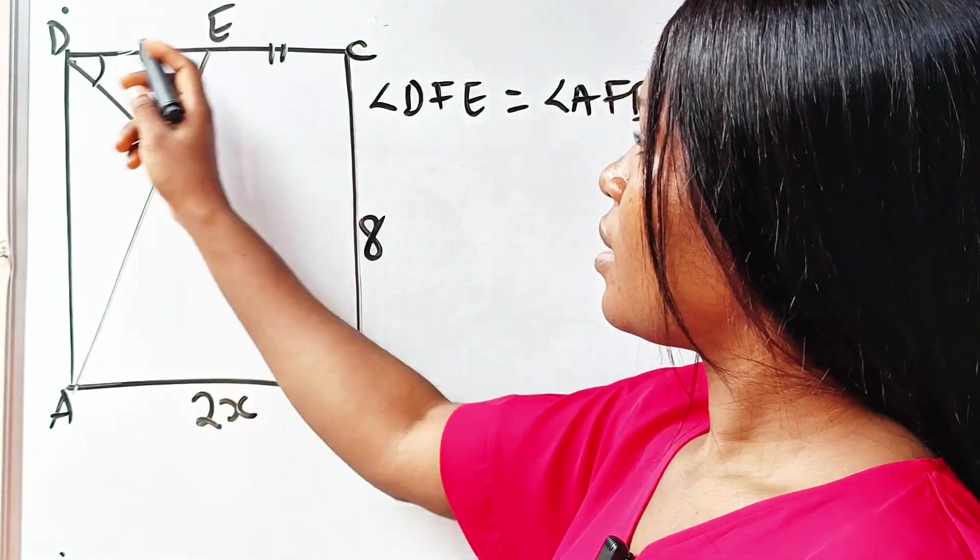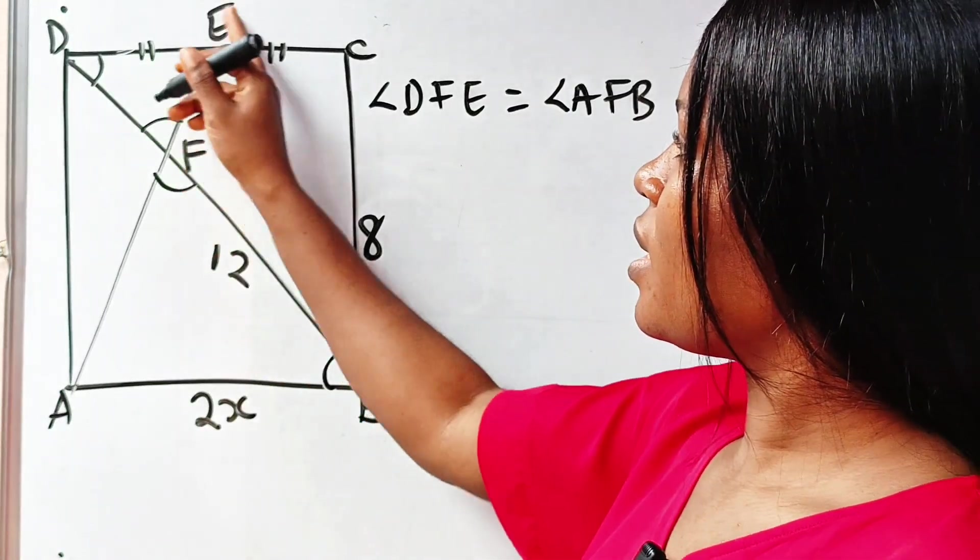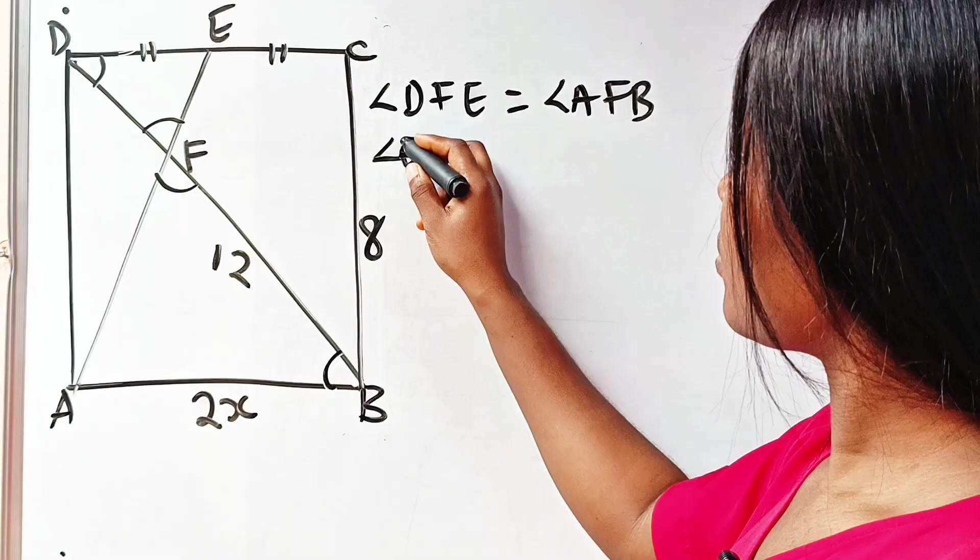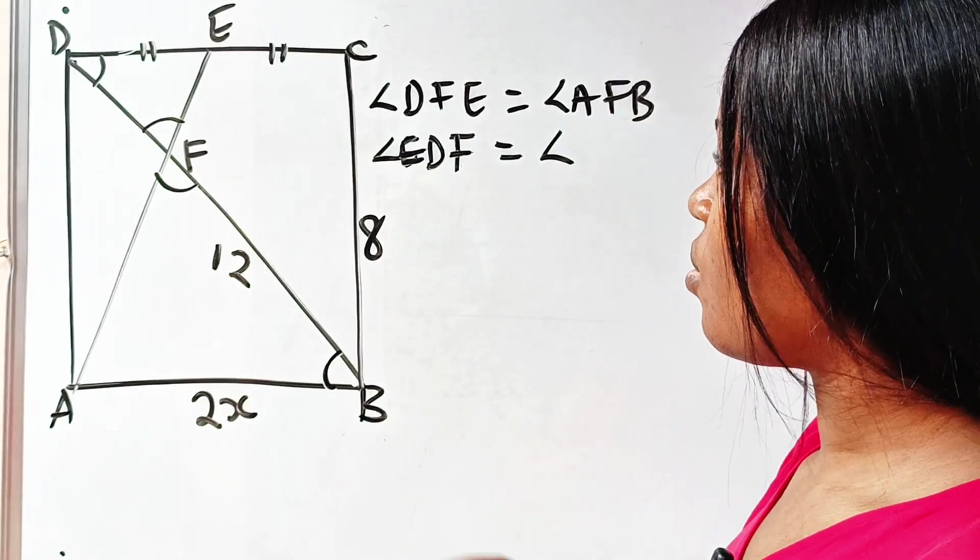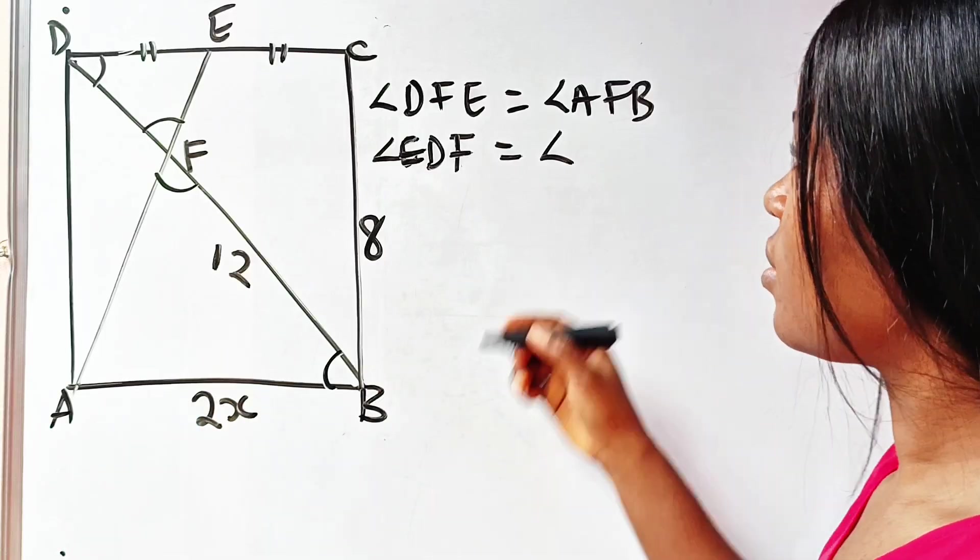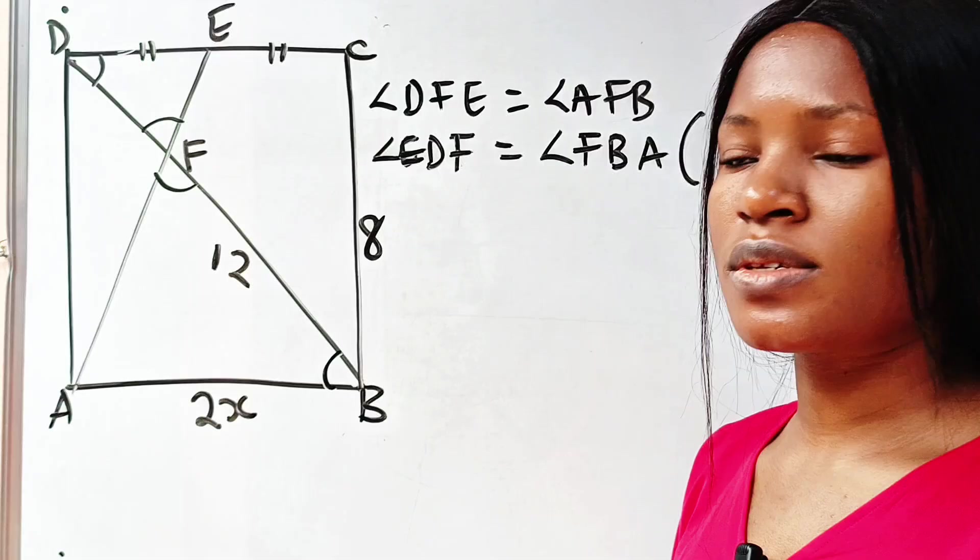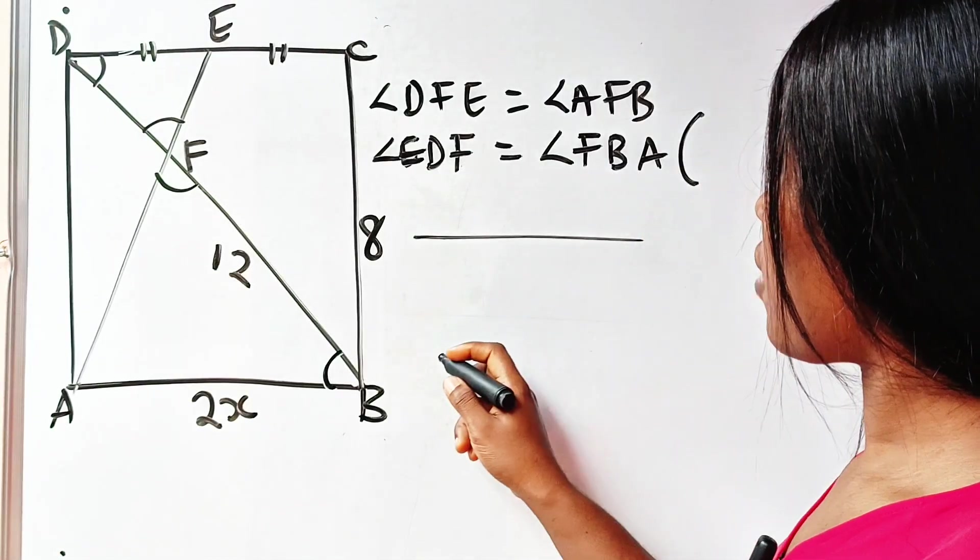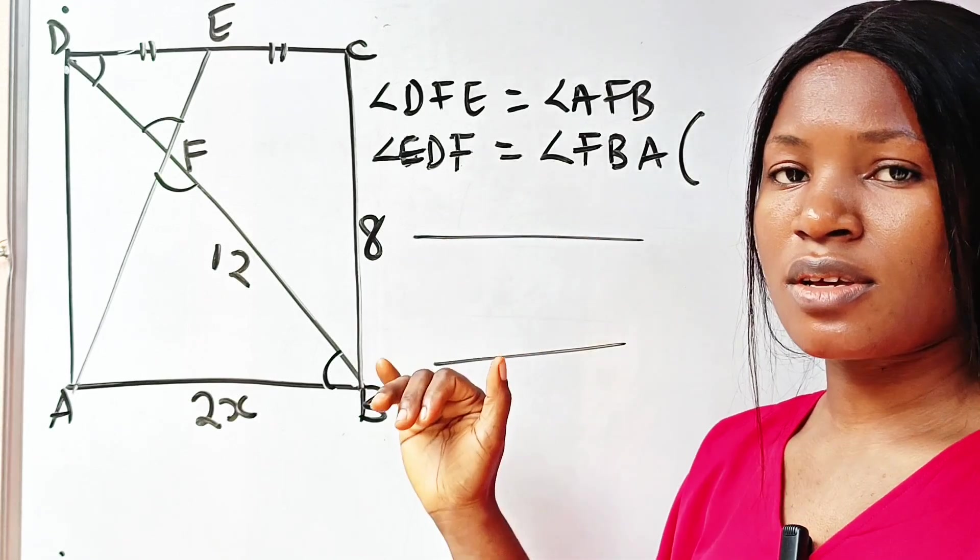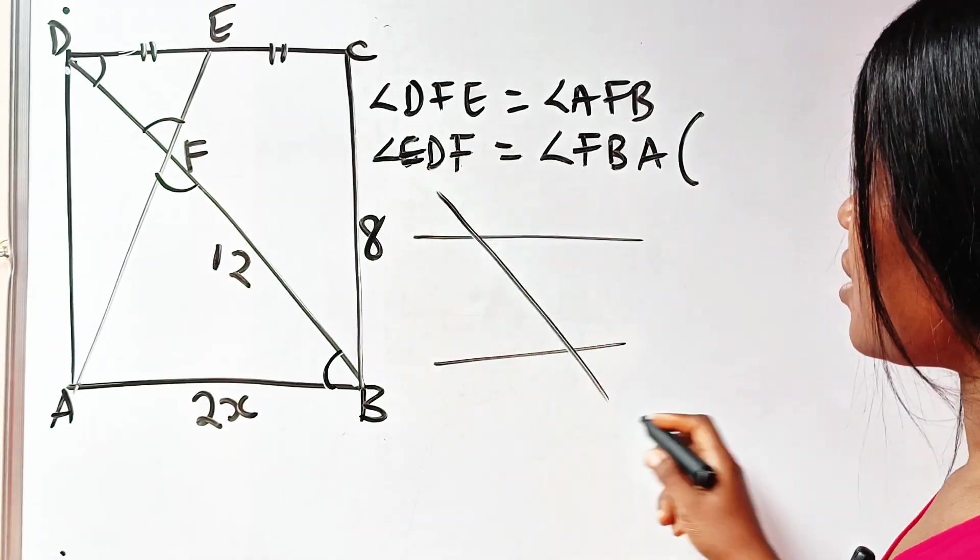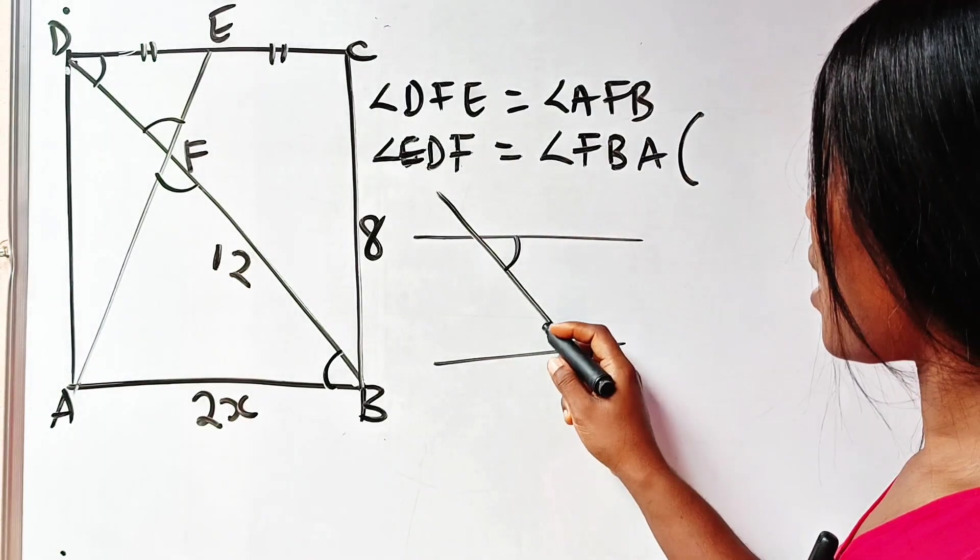Now also, angle D is equal to angle B. That is, angle EDF is equal to angle FBA by alternate angles. Remember that when you have two parallel lines—of course DC is parallel to AB since this is a rectangle—so when you have two parallel lines and you have a transversal across them, angles here and here are alternate angles.